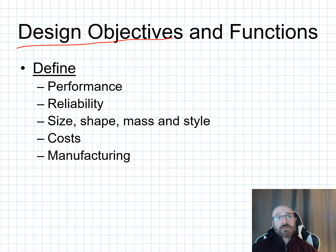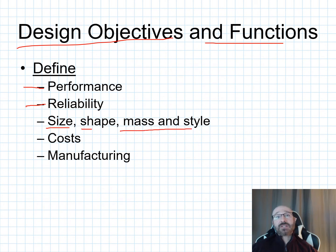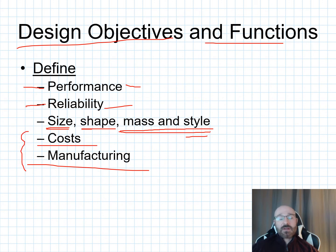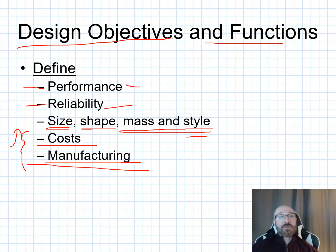When discussing design objectives and functions, we consider performance, reliability, shape, size, mass, and style. Costs and manufacturing are huge as well. You need to know performance and reliability requirements, size and weight constraints, basic shape requirements, and style needs — especially as they drive costs. For example, lightweight materials may increase cost significantly, or using stainless steel requires different manufacturing processes. All these need to be defined in your design objectives because they impact every other stage of the design process.